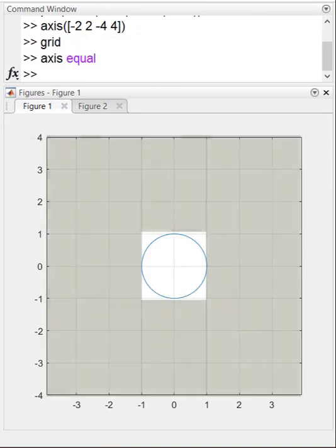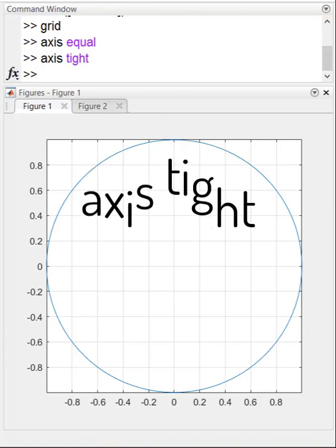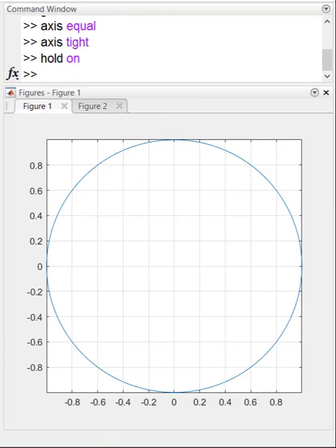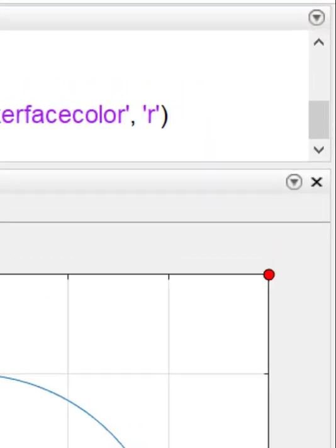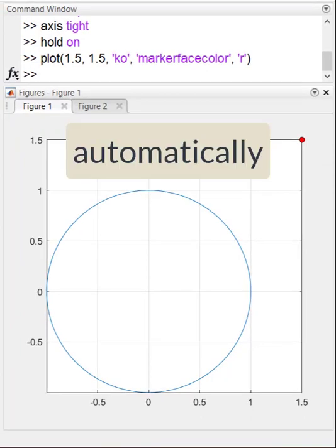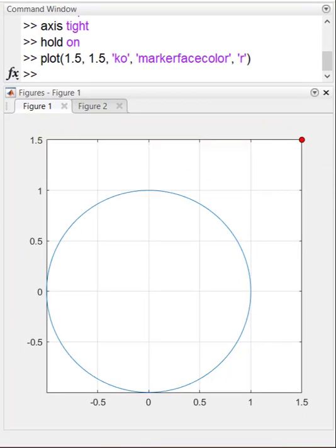I want to get rid of all these empty spaces. I type axis tight. MATLAB makes it as tight as possible. If I hold down this graph and add a point outside its boundaries, MATLAB automatically changes the axis limits to show this new point.